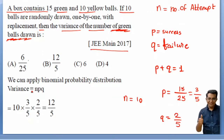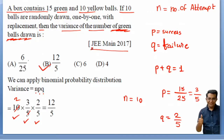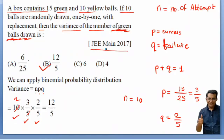There is a very simple formula: variance equals N × P × Q. Here N = 10, P = 3/5, Q = 2/5. The final answer: 10 × (3/5) × (2/5) = 12/5. This question was asked in JEE Main 2017.